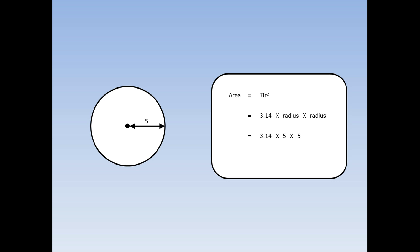Now the radius is 5, so this is 3.14 times 5 times 5, and that is equal to 78.5 centimetres squared because it is area.